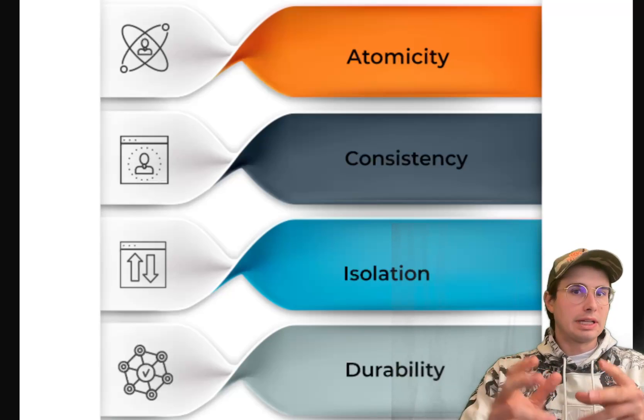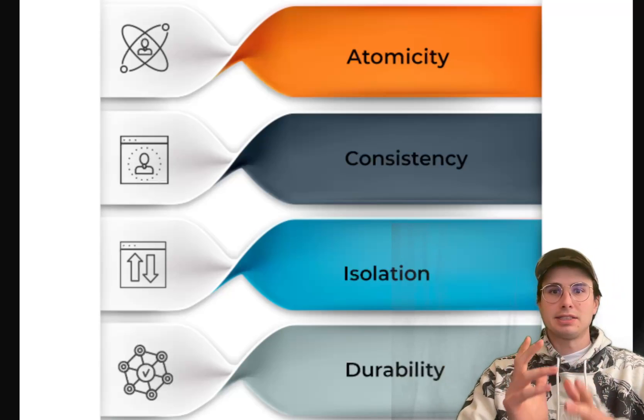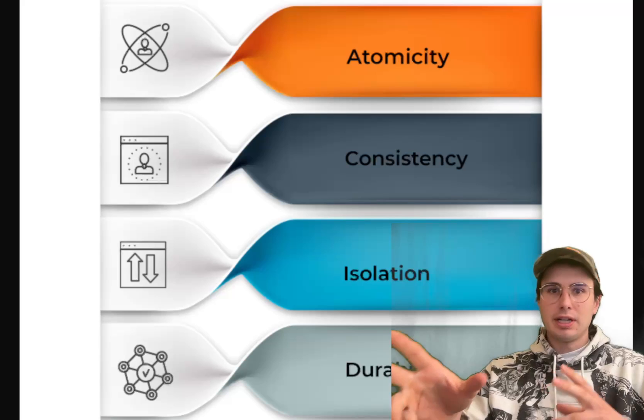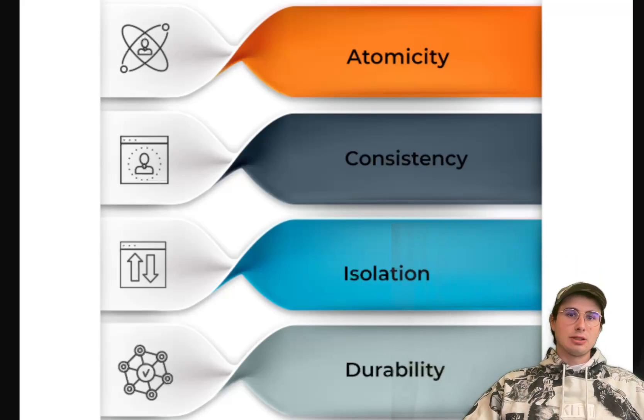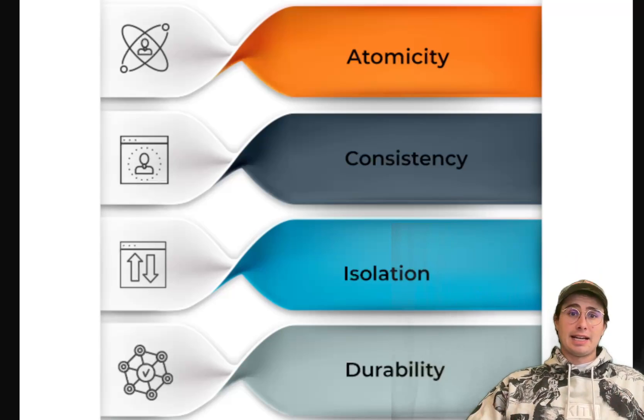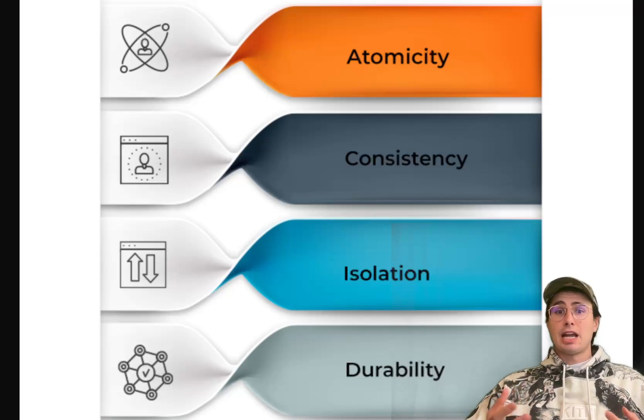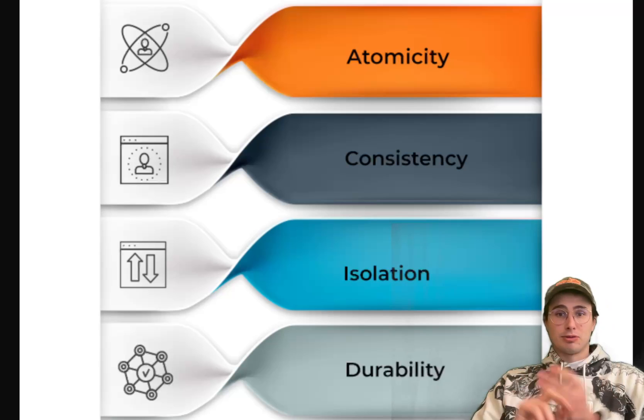Traditional relational databases like PostgreSQL and MySQL are well known for their strong ACID compliance. However, if you're dealing with larger scale distributed systems, newer alternatives like Google Spanner or Amazon Aurora are also designed to maintain ACID properties at scale. So just make sure you select a database that aligns with your systems needs for consistency, scalability and performance.